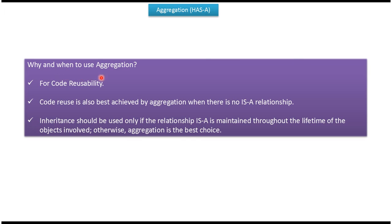Why and when to use aggregation, or the has-a relationship? For code reusability. When there is no is-a relationship, then for code reuse purposes we can use aggregation. This is about the has-a relationship. Thanks for watching.